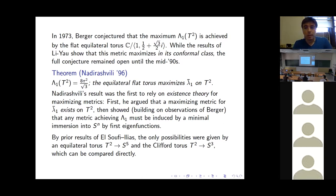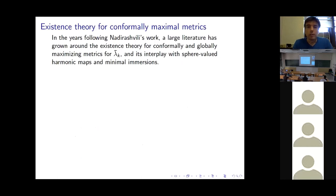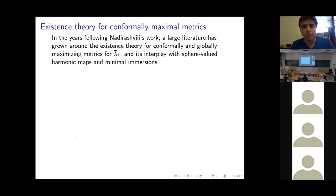This stimulated a large body of work understanding the existence theory in general. A big literature has grown up around determining when maximizing metrics exist, what they look like, and — when they don't exist — what happens in the degeneration. Both the conformal problem and the global problem are very interesting.